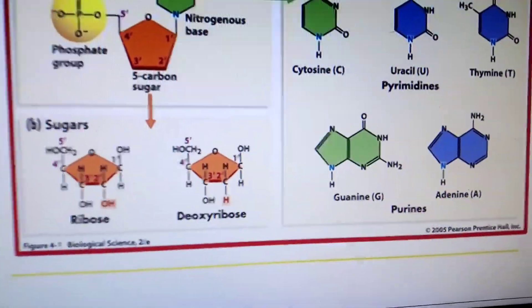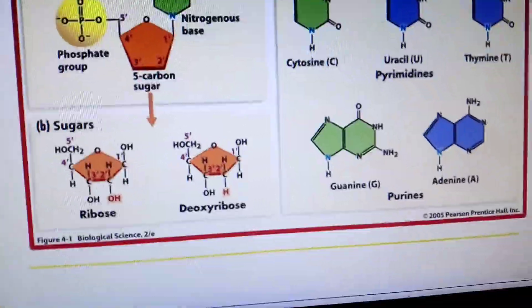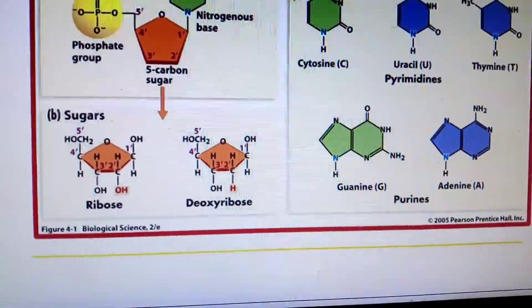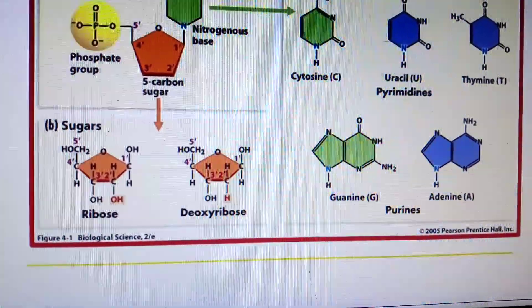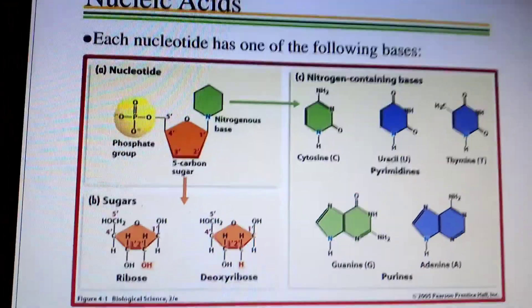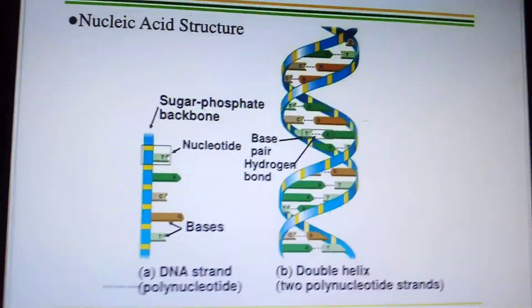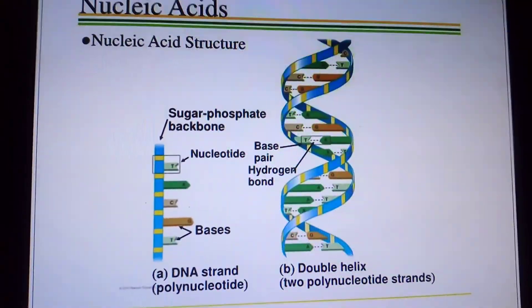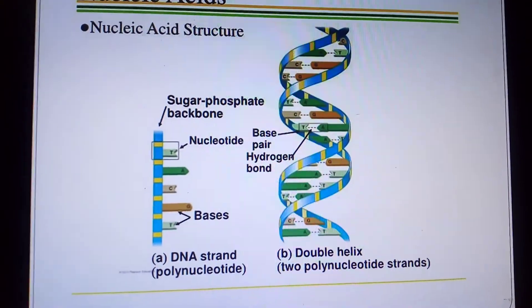Two types of sugar are present in nucleic acids: ribose sugar and deoxyribose sugar. This forms the nucleic acid structure.